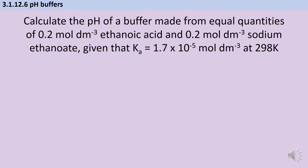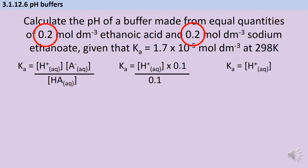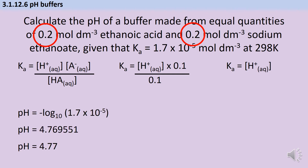Here's one more of this style for you to try before we move on to the third style — pause the video and write down your answers. When you halve both concentrations because equal quantities are mixed, the ratio [acid]/[anion] cancels out, so Ka equals the hydrogen ion concentration directly. Taking the negative log base 10 of Ka gives a pH of 4.77.